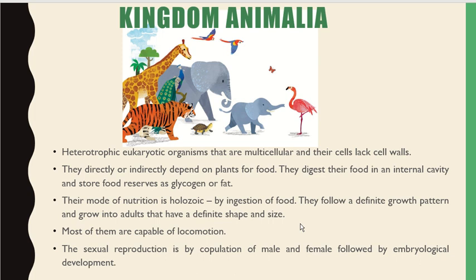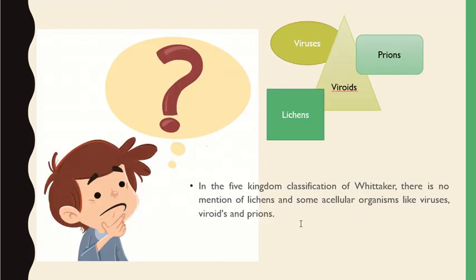Animals follow a definite growth pattern and grow into adults with a definite shape and size. Most are capable of locomotion, and sexual reproduction is by copulation of male and female followed by embryological development. In Whittaker's five-kingdom classification, there is no mention of lichens, viruses, viroids, or prions, so we will discuss them separately.